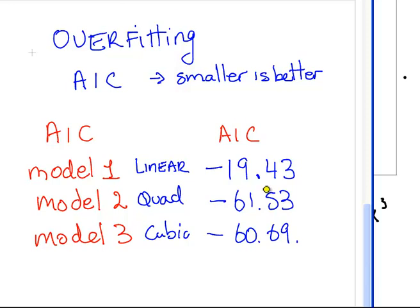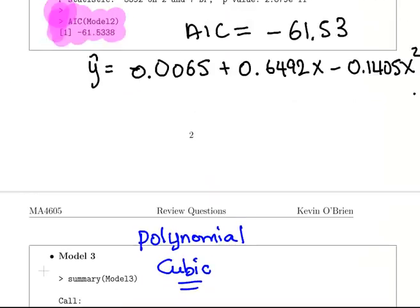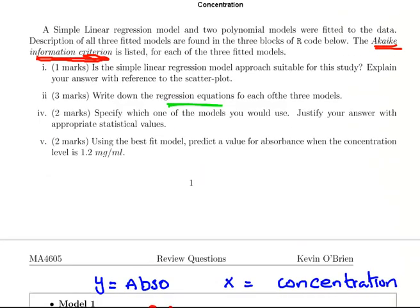That's the linear, that's the quadratic, and that's the cubic. The smallest one is actually this one here, the quadratic model. That is the best of our models, because it allows for curvature, but it doesn't overfit the data. So that's the best model we're going to work with. Which of the models would you use? Model two. Justify your answer with appropriate statistical values, AIC.